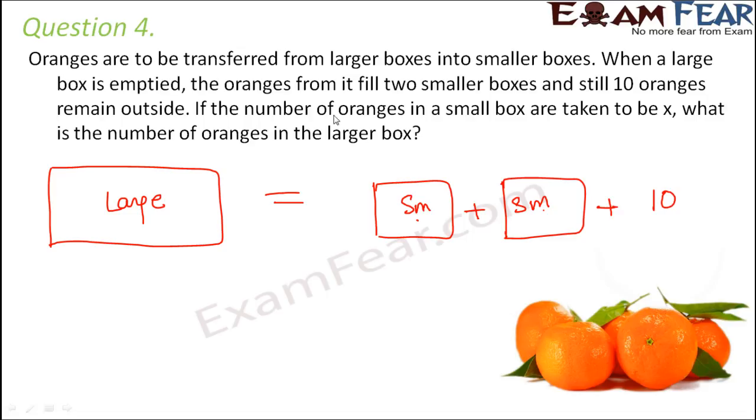Now the question is if the number of oranges in a small box are taken to be X. So let's say that the number of oranges inside the smaller box is X. The number of oranges inside this small box is also X. What is the number of oranges in the larger box? So larger box oranges would be how much? So this would be equal to X plus X plus 10. Now 1X plus 1X is equal to 2X plus 10. So therefore the total number of oranges in the larger box would be 2X plus 10.